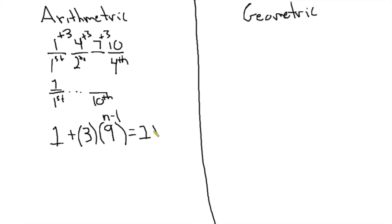So what is that? 1 plus 27 is 28. So in other words, the 10th term is going to be 28.